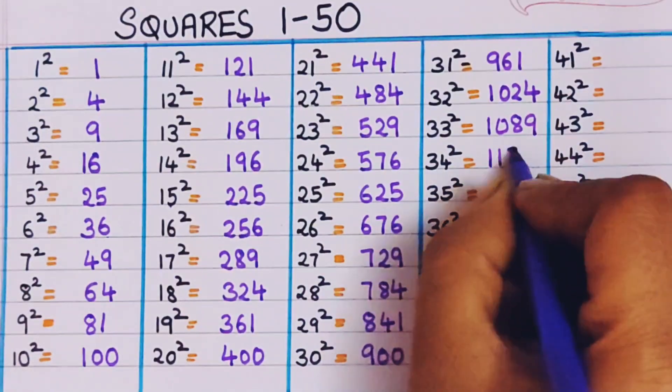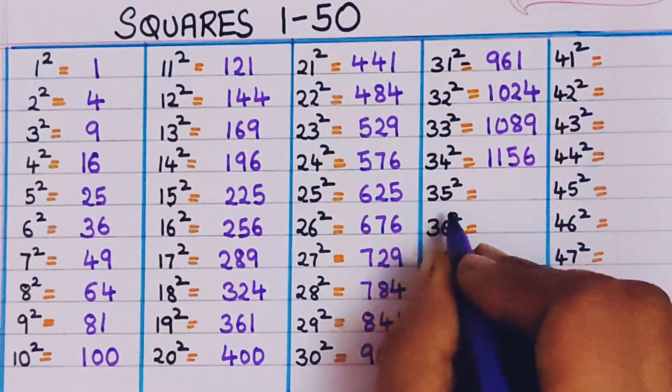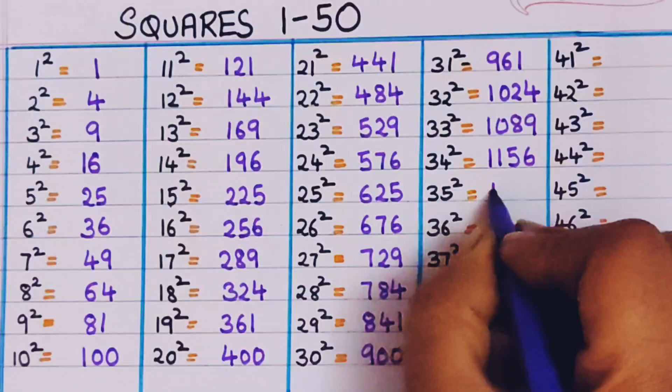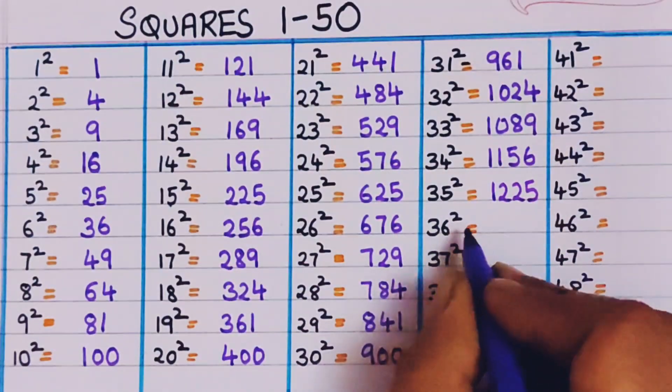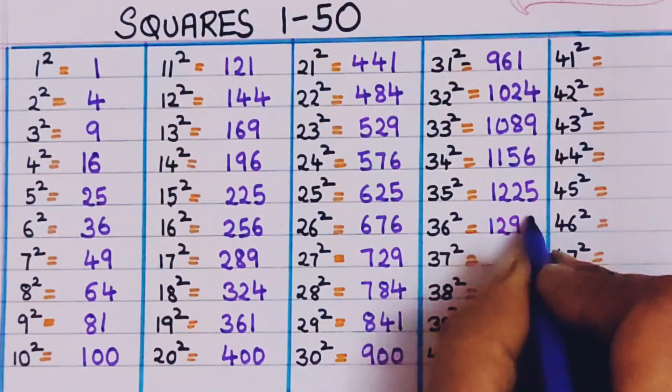34 square, 1156. 35 square, 1225. 36 square, 1296.